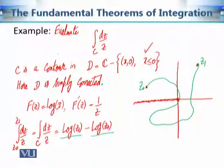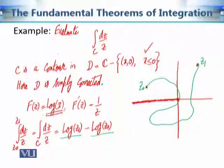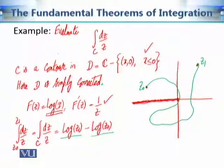The function Log(z) is not analytic along its branch cut, which is the negative real axis. We can take the branch cut to be any ray, but for the principal logarithm this is the branch cut. Because we excluded the negative real axis from D, we can write F'(z) = 1/z, since in domain D the derivative of the principal logarithm exists.